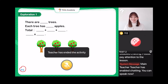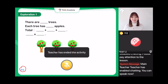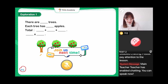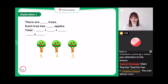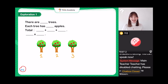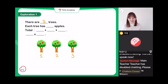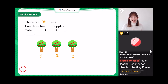Excellent! Most of us are saying the right answer — there are three trees in our picture. We have one, two, three trees. I can see some people in the chat box as well. So we have three trees.